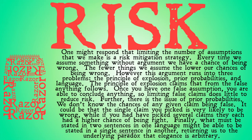Further, there is the issue of prior probabilities. We don't know the chances of any given claim being false — they don't all have an equal chance of being false. It could be that the single claim you picked to keep is very likely to be false, while if you had picked several claims, they each had a much higher chance of being right. Finally, what must be stated in two sentences in one language might be able to be stated in a single sentence in another, returning us to the underlying paradox that elegance is arbitrary based on the language you pick.